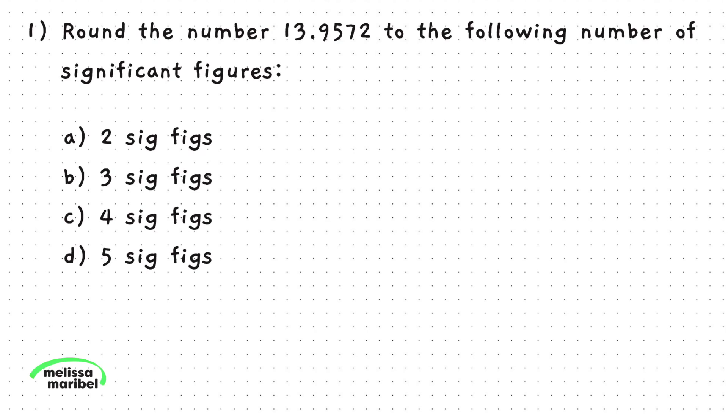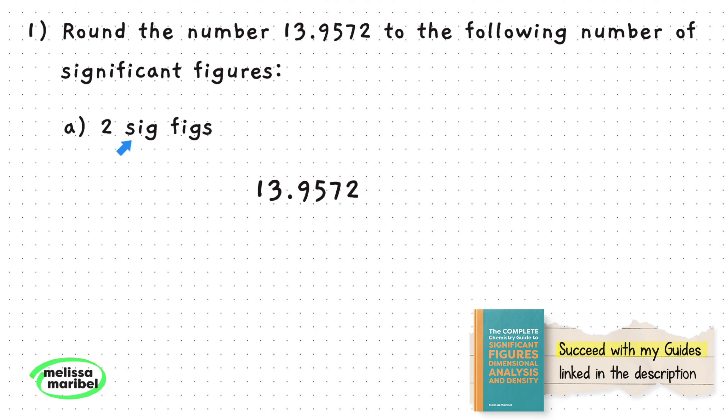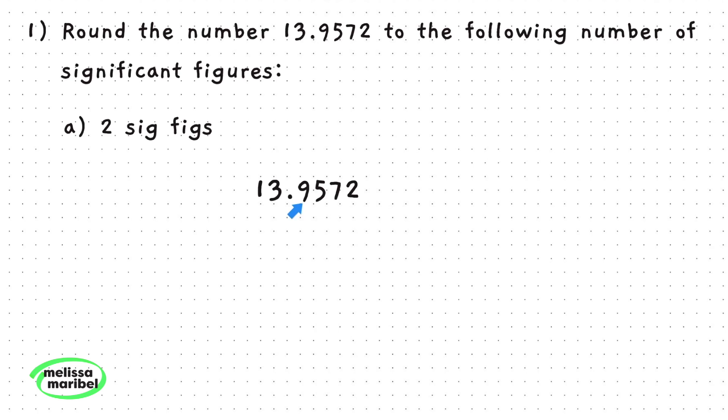Number 1. We are asked to round the same number to different significant figures. Let's start with Part A. Part A wants this number rounded to two significant figures, so we would stop at the 3, then look at the number to the right of 3 to see if we need to round up or down. Since 9 is greater than 5, we must round up to 14. The correct answer is 14.